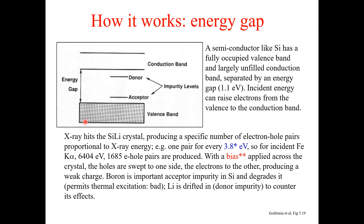When x-rays hit the silicon-lithium crystals of an EDS detector, they produce a specific number of electron-hole pairs proportional to the x-ray energy. As an example, if one electron-hole pair is generated with an energy of 3.8 electron volts, and we have an x-ray from iron with an energy equal to 6404 electron volts, then by this analogy we can generate 1685 electron-hole pairs.